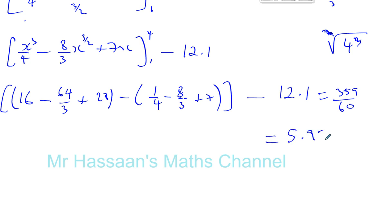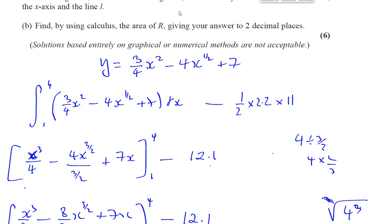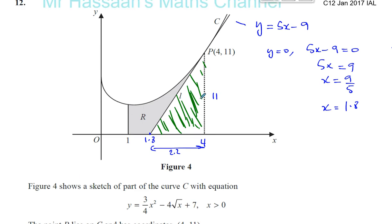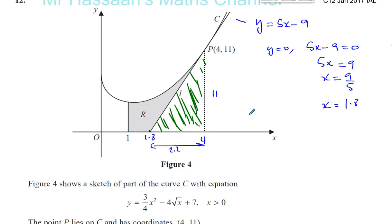5.98 units squared. That's the area under the curve. Take away the area of the triangle. Gives us the shaded region R. I hope that was clear.